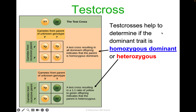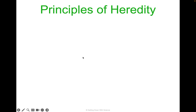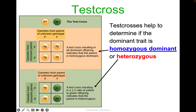We do test crosses to determine if a trait is heterozygous dominant or homozygous dominant. You have gametes from an unknown genotype — you know the phenotype but not the genotype — and you cross with gametes from a recessive parent. In practice, you'd get a true breeding plant and cross with an unknown, then determine the genotype from the offspring. For example, if all the peas are yellow, yellow appears to be dominant, and you can determine the unknown parent's genotype from its children.